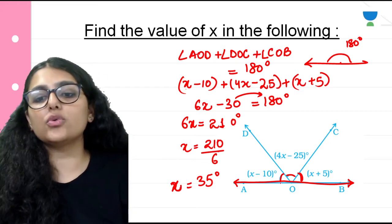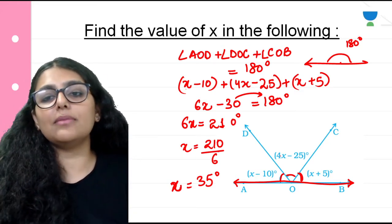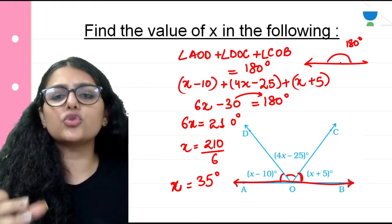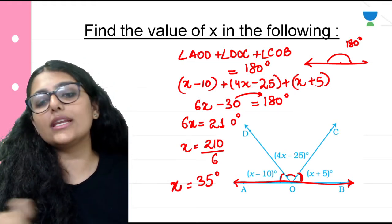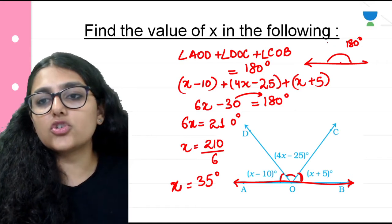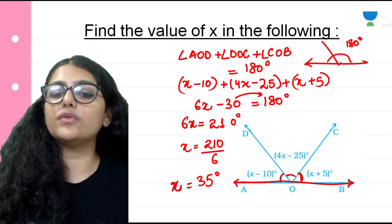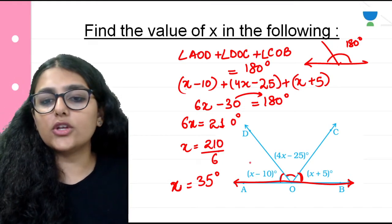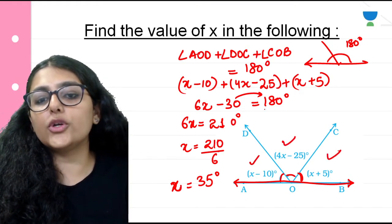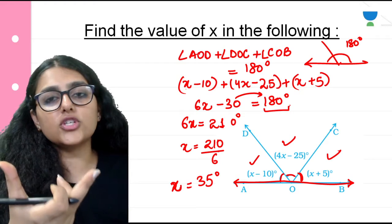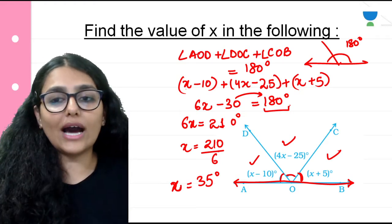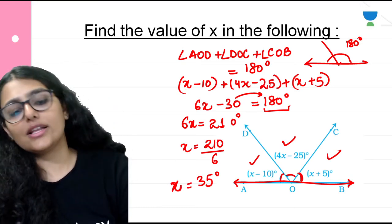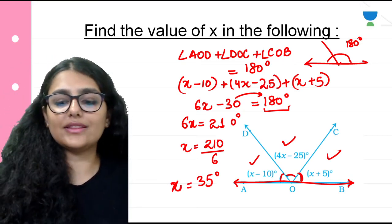So x equals 35 degrees. The property used here is that on a straight line, all angles sum to 180 degrees. This property can be applied to two or more angles. Adding the three angles and setting the sum equal to 180 forms an equation. Solving simple equations gives the answer, which is 35 in this case.